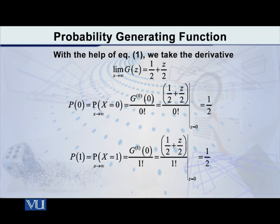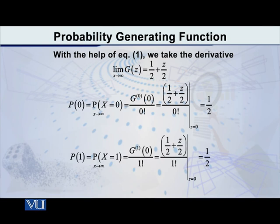The 0th derivative simply means the function itself, so all you have to do is put the expression of the PGF there. That is 1/2 plus z/2, divided by 0 factorial. Substituting z equal to 0, we get 1/2. You know that for the Bernoulli random variable we are considering — tossing a fair coin once — the probability is indeed 1/2, so the formula gives exactly the correct answer.